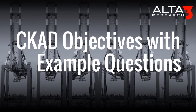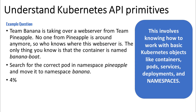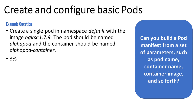Here are some example questions for each of the objectives, as well as an explanation of how your understanding of that objective may be tested. Understand Kubernetes API primitives — this involves knowing how to work with basic Kubernetes objects like containers, pods, services, deployments, and especially namespaces. Create and configure basic pods: can you build a pod manifest from a set of parameters, such as a pod name, a container name, a container image, and so forth?